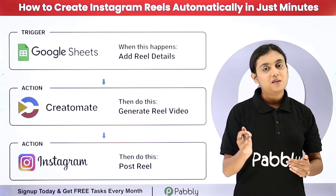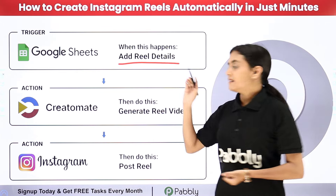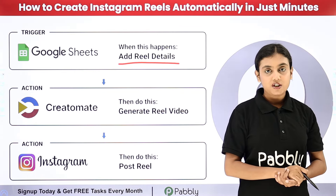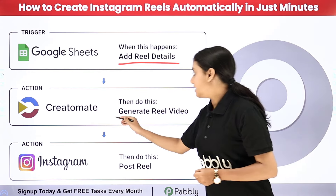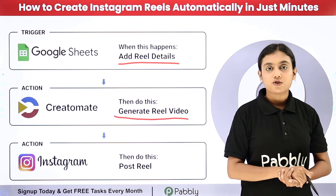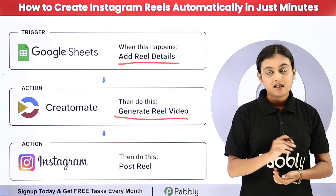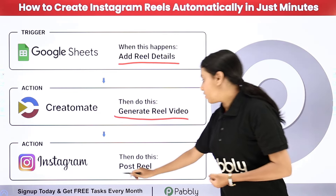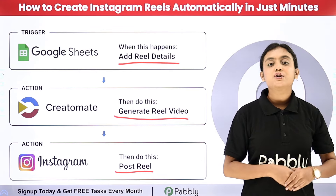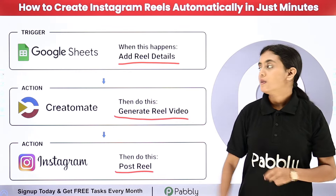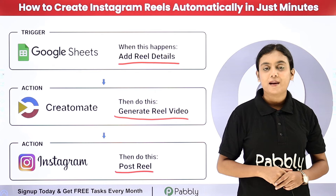In this automation, as soon as I enter the details of the Reel in my Google Sheets, automatically a Reel is going to be generated using Creatomate. Once the Reel is generated, it is going to be automatically posted on my Instagram account. We are going to create an automation between all of these applications with the help of Pabbly Connect.